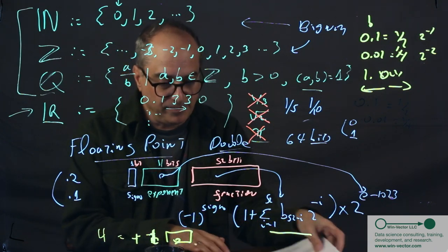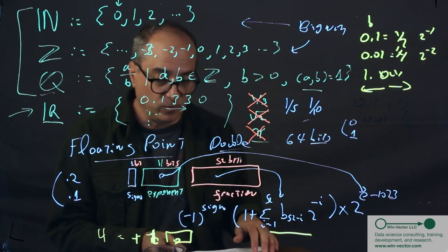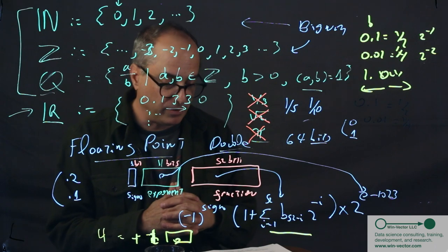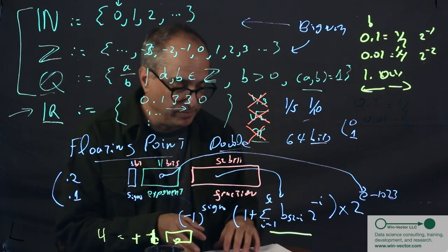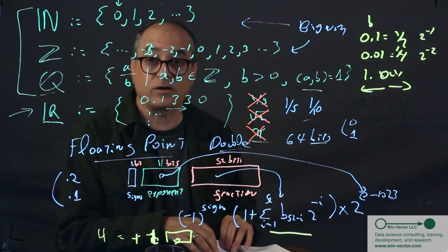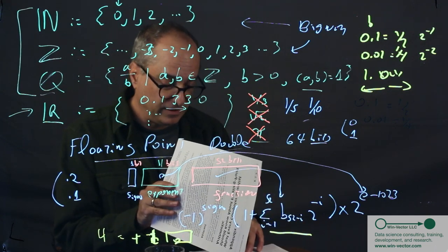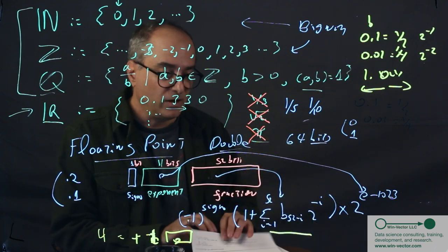Now, the Bible for floating point is a famous paper called What Every Computer Scientist Should Know About Floating Point Arithmetic by David Goldberg in 1991. I think Oracle has a free reprint of that. And that is basically the thing to look for.